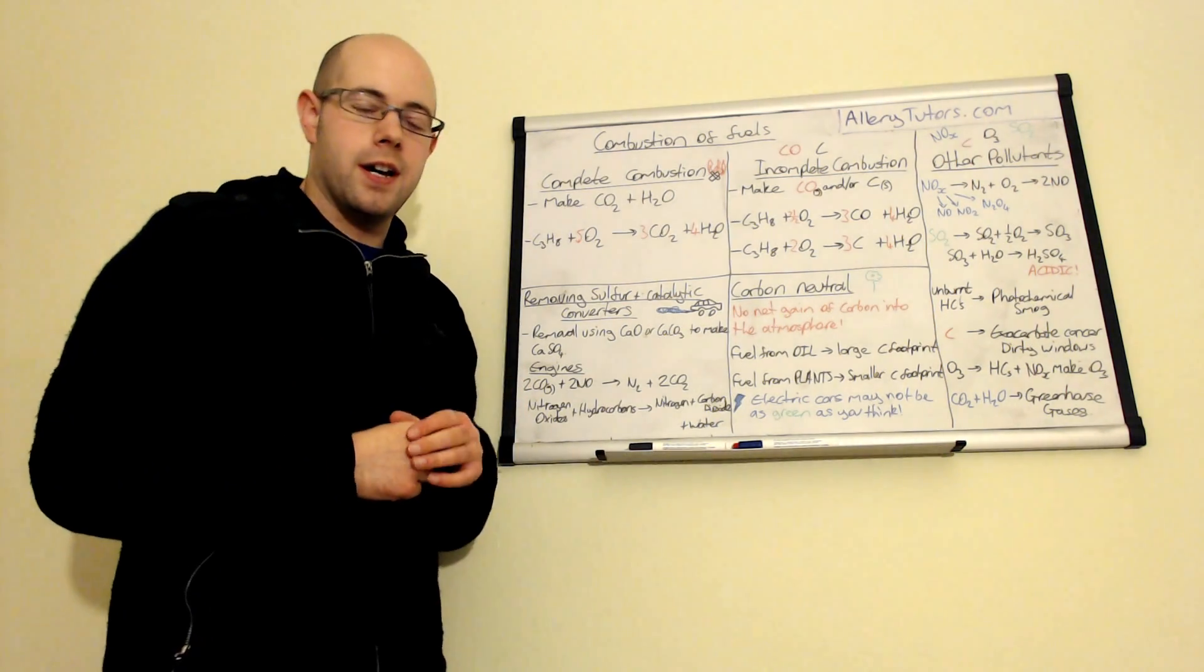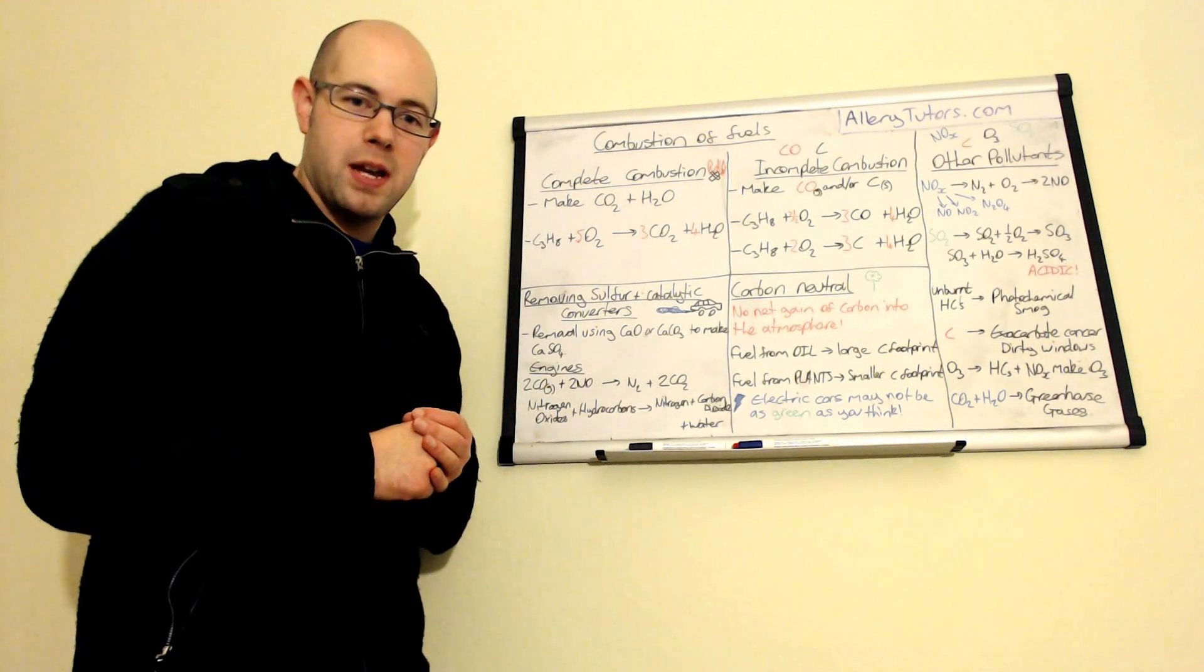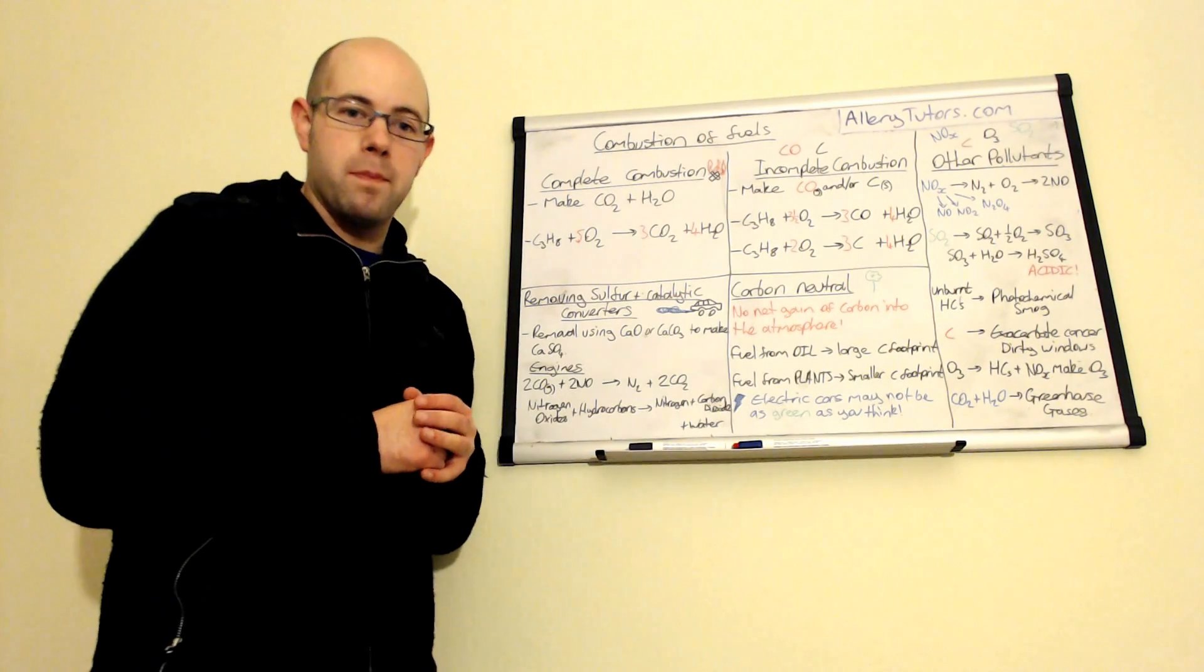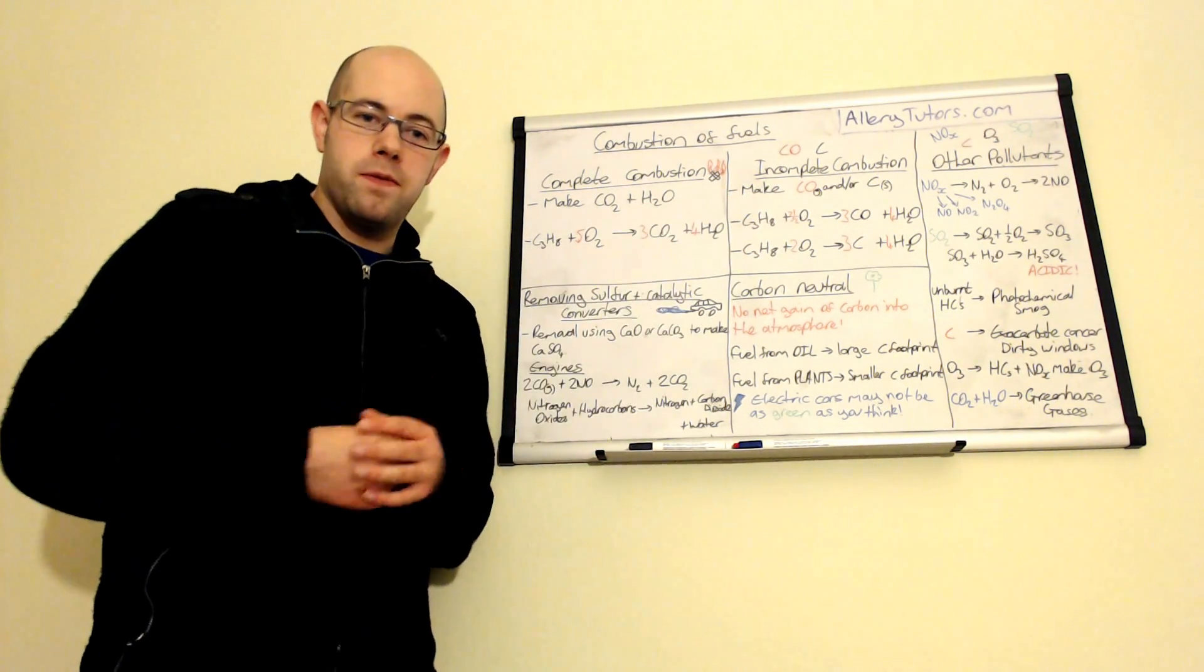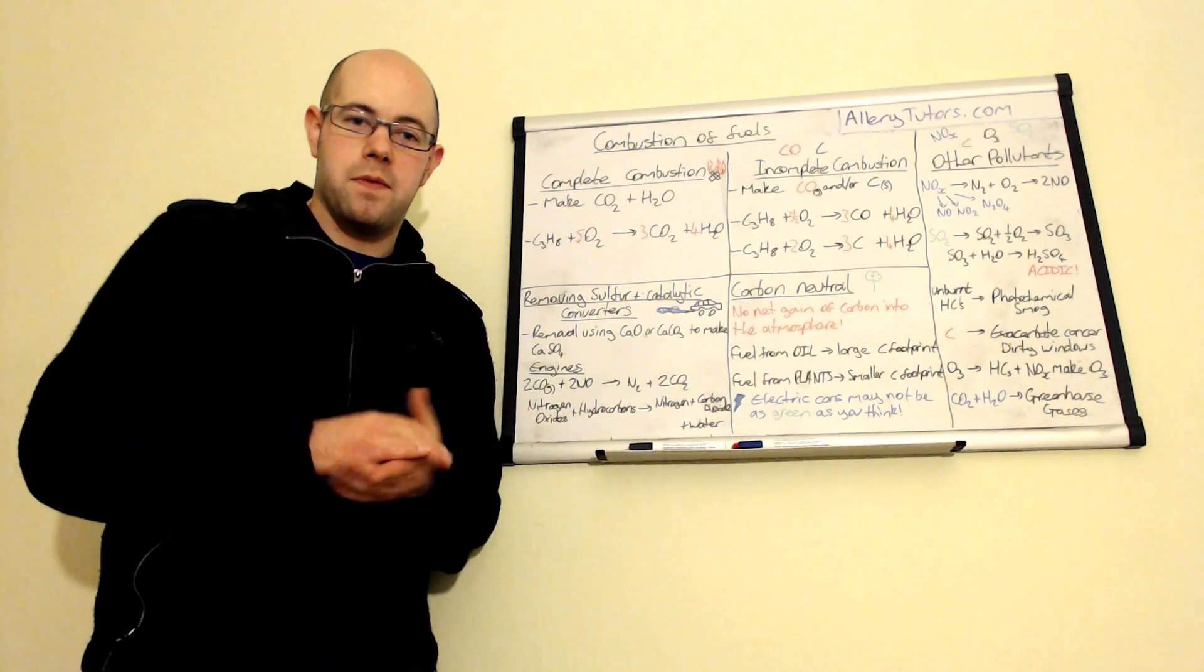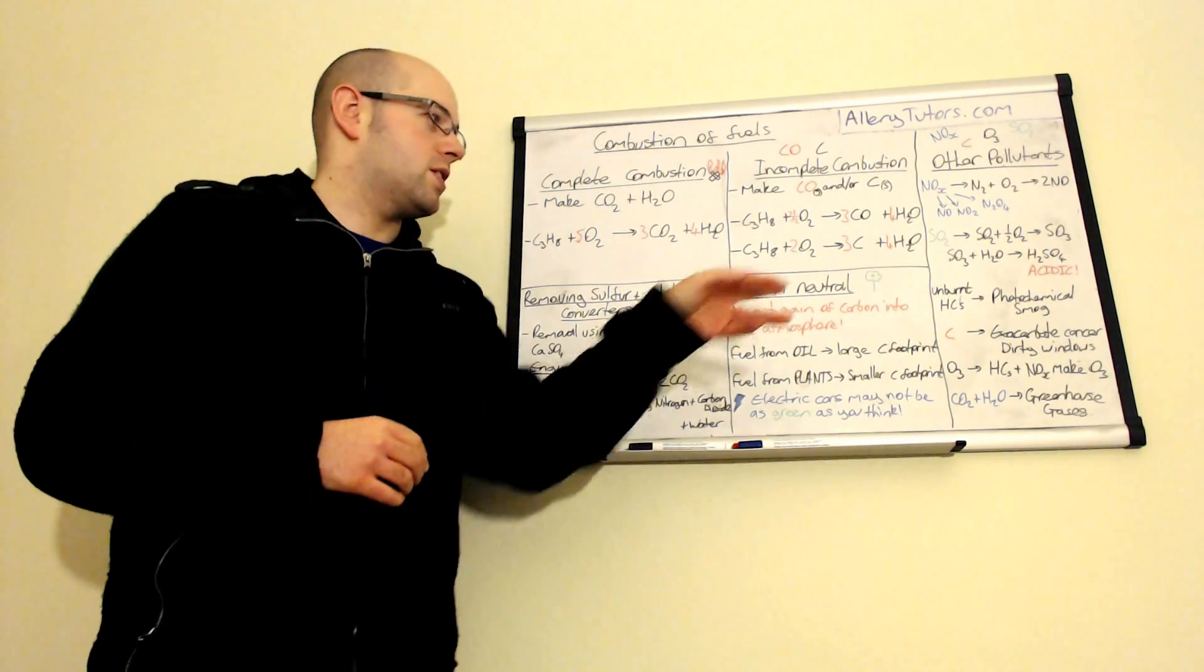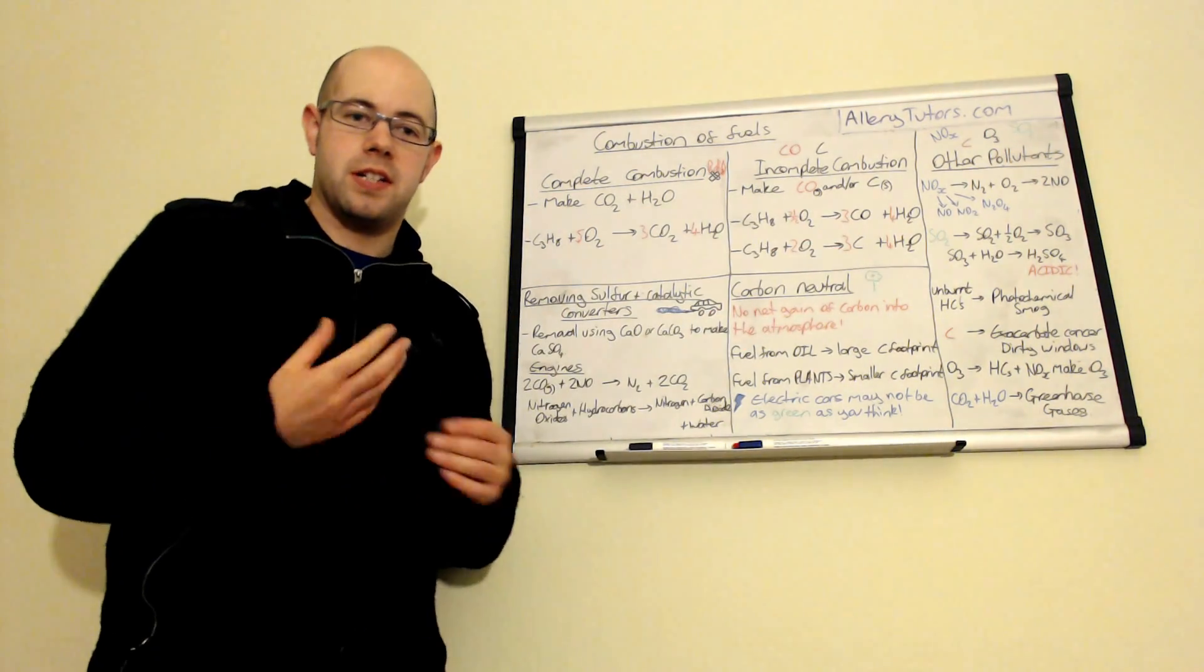And we can also produce carbon particulates. Now, this is also known as soot. And soot, actually, is the substance that makes the windows dirty on buildings or objects around the place dirty. And also, it's not good for breathing as well, particularly if you're an asthmatic. Breathing in things like carbon particulates can actually exacerbate your asthma.